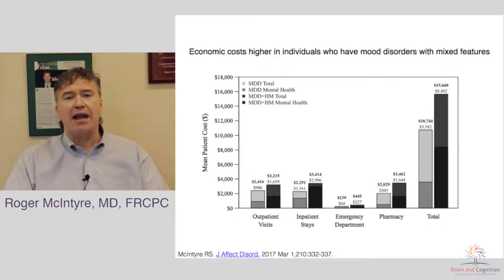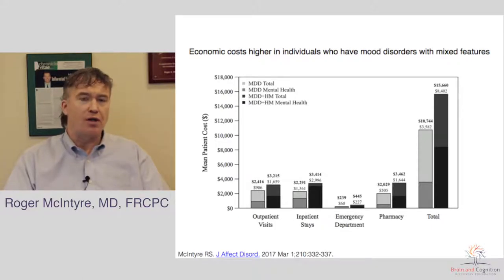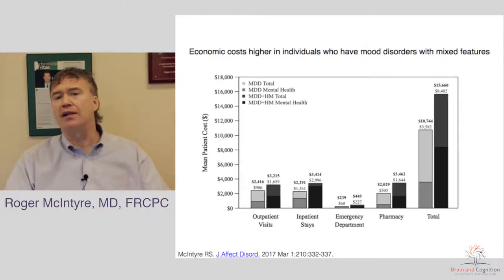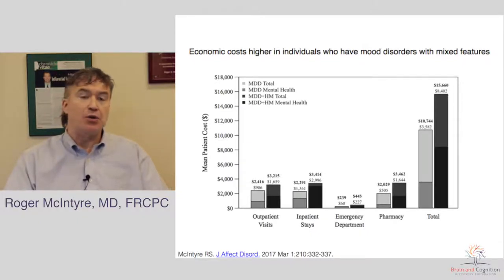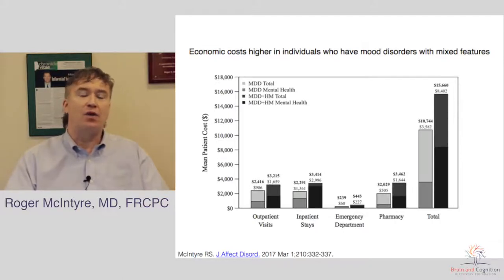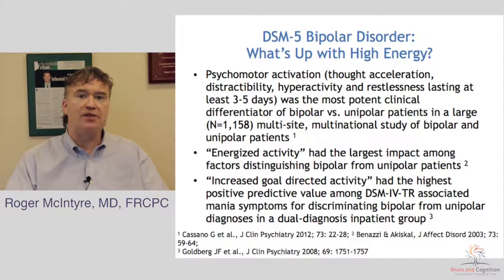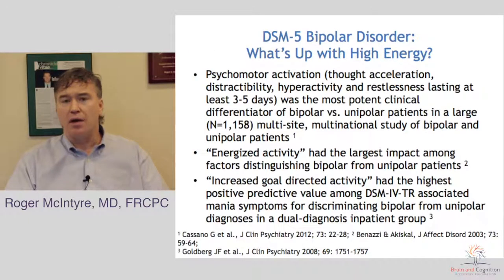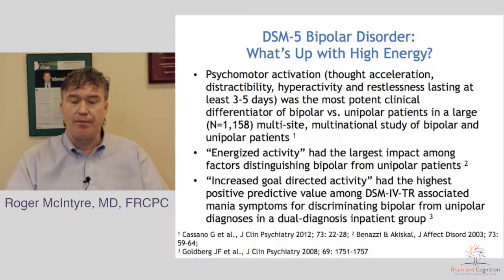More recently, we've had a look at the economics of mixed features. Individuals who have mixed features are more likely to be off work — absenteeism — and have decreased performance at work — presenteeism. They're also more likely to utilize health care services across primary, secondary, and tertiary centers. Moreover, individuals with mixed features are more likely to have disability payments given to them.